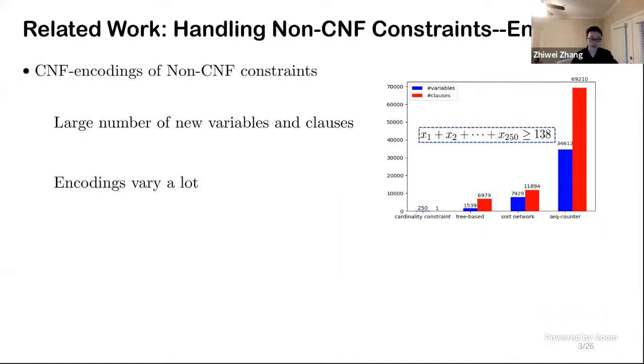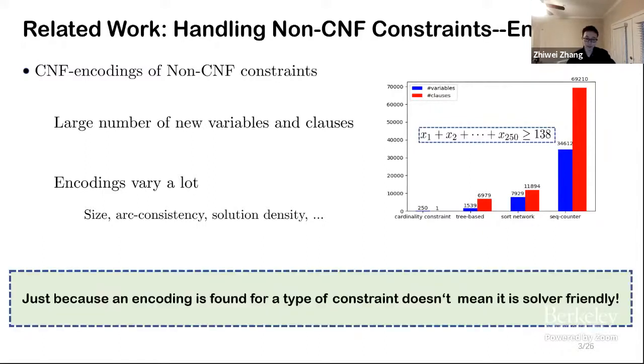Besides the size, encodings can vary a lot by other aspects like arc consistency and the solution density. Usually different solvers prefer different encodings, and the takeaway message here is that just because an encoding is found for a type of constraint doesn't mean it is solver-friendly.